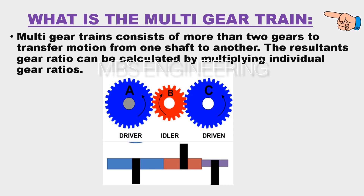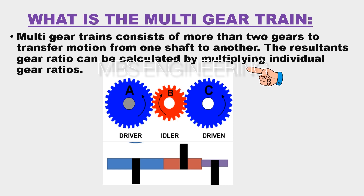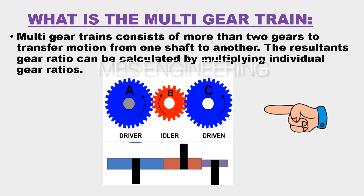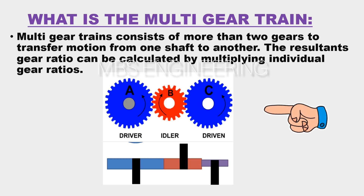We will discuss what is the multi-gear train. Multi-gear trains consist of more than two gears to transfer motion from one shaft to another. The resultant gear ratio can be calculated by multiplying individual gear ratios. The below multi-gear train consists of three gears: the driver gear, idler gear, and driven gear.